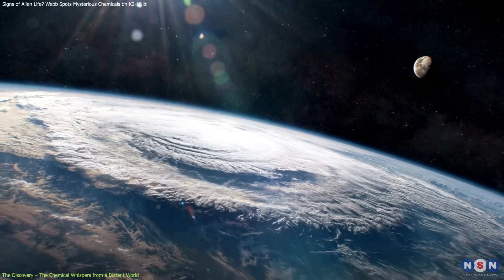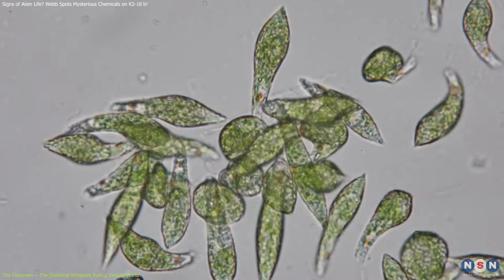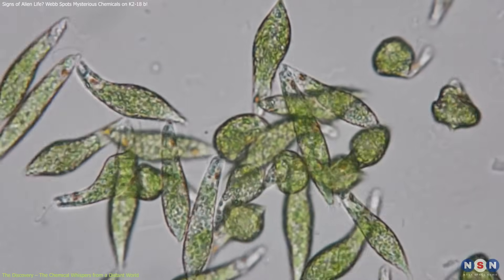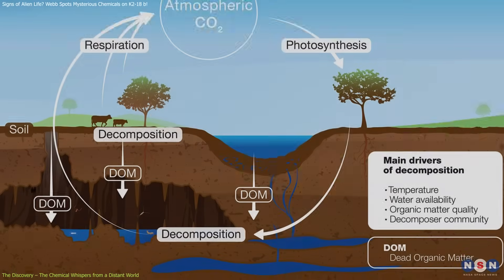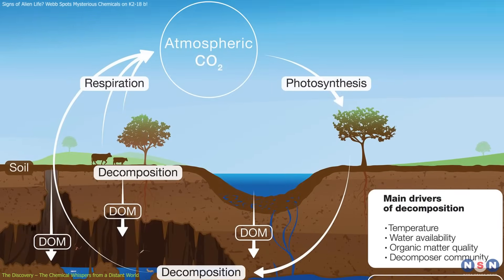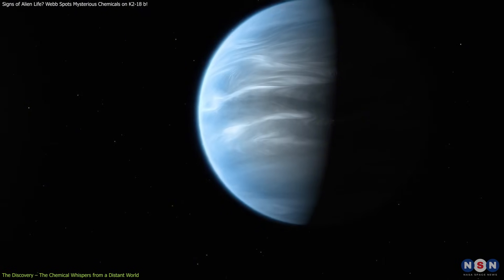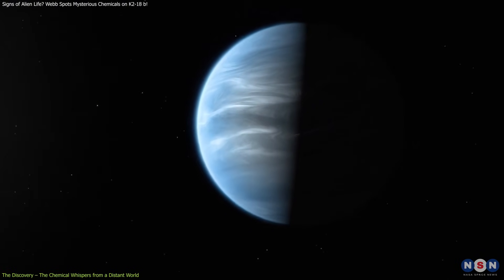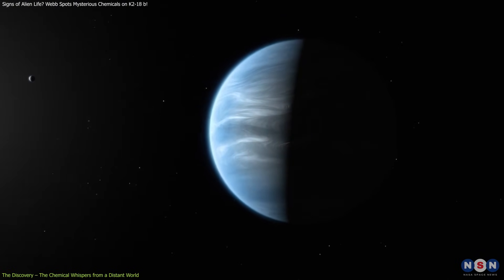This is highly significant. On Earth, DMS is produced almost exclusively by marine phytoplankton, and DMDS is linked to the breakdown of organic matter. Their presence in a distant planet's atmosphere is a tantalizing hint that biological processes could be occurring.